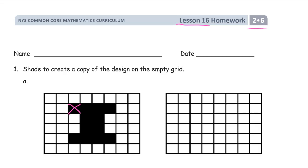That's 2, that's 3 — 3 squares over and 2 down. So it looks like it's going to be in this corner of that box. So I'm going to start it right here.